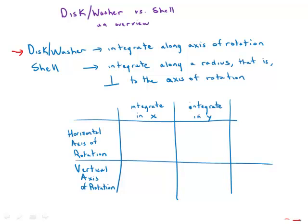When we're using the disk method, remember that we always integrate along the axis of rotation. Whereas in the shell method, we integrate along a radius, that is to say along a line that is perpendicular to the axis of rotation.